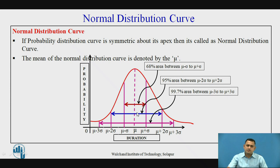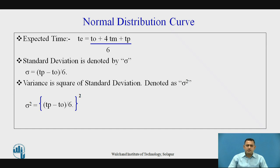The range from mu minus two sigma to mu plus two sigma covers 95 percent of the overall area, and the range from mu minus sigma to mu plus sigma covers 68 percent of the overall area. These ranges are very important and are helpful to define the particular probability of the project. Here are some formulas for the normal distribution curve. The first is the expected time: te = (to + 4tm + tp) / 6. The standard deviation is sigma = (tp - to) / 6, where tp is the pessimistic time and to is the optimistic time.